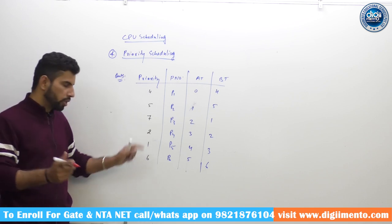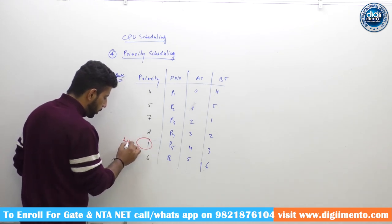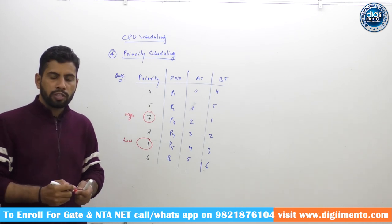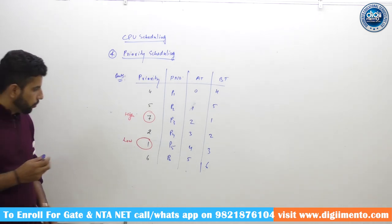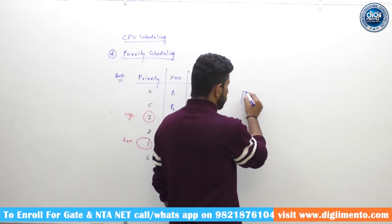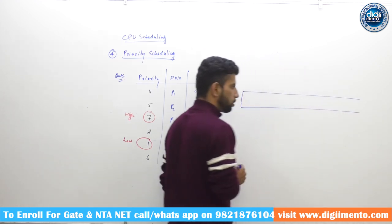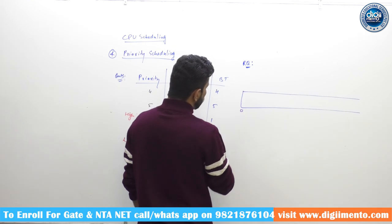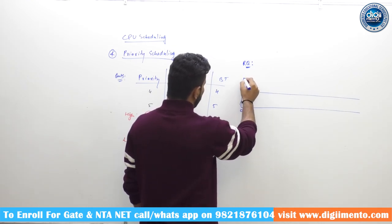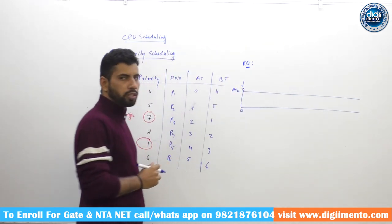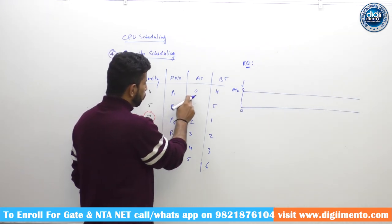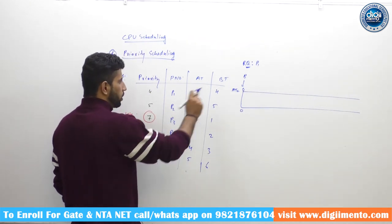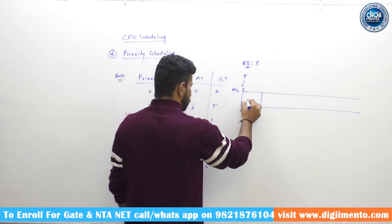Here, the lowest number has the lowest priority and the highest number has the highest priority. We will slightly modify and solve this question first in non-preemptive mode. We use a Gantt chart and maintain the ready queue. The Gantt chart starts at 0. At time 0, only P1 is in the ready queue with priority 4, so we go for P1.